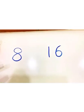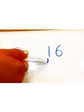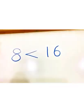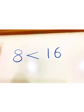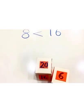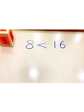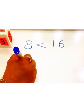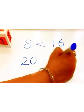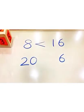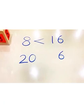So children, which is the greater number? Number 8 or number 16? Number 16. Good. Now let's roll the dice again. Hey, what numbers did we get? Number 20 and number 6. Which is the greater number? Number 20. Wow!